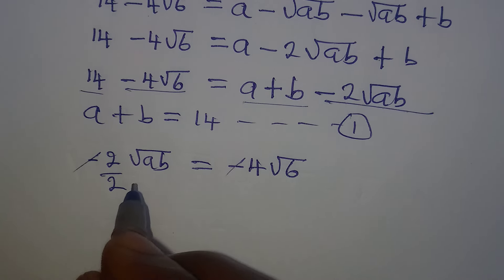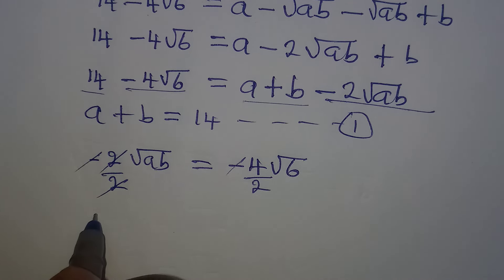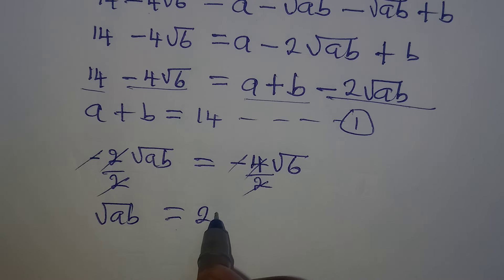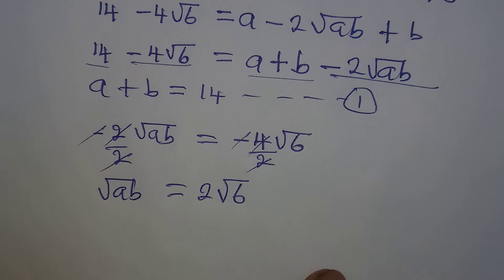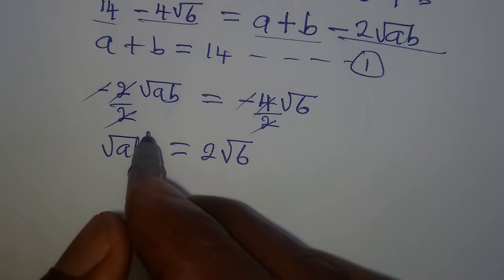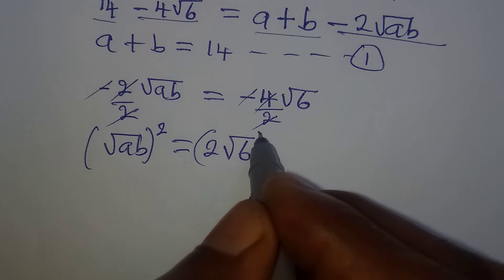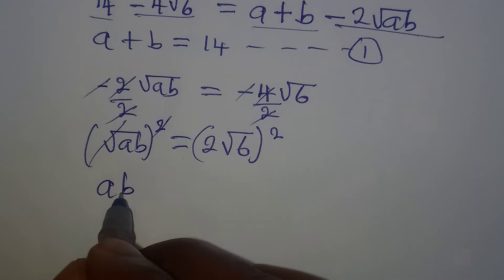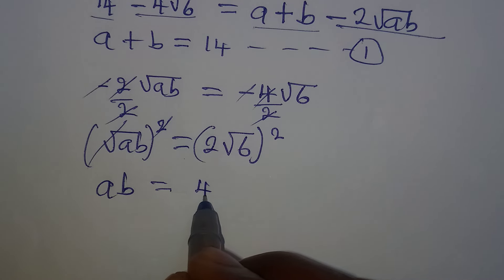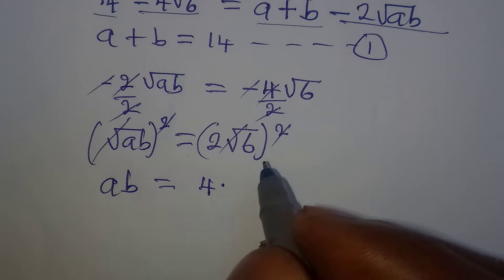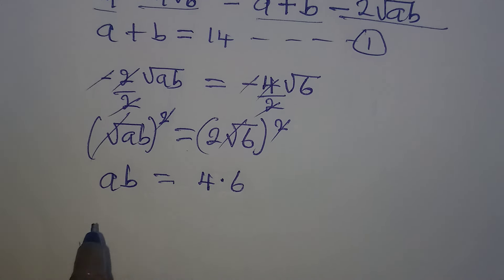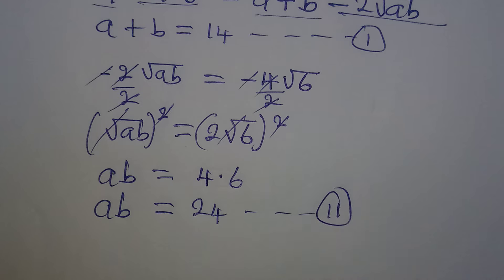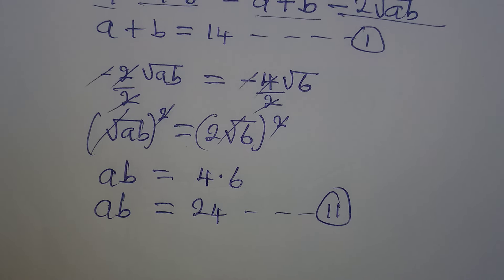The negatives cancel, and we can divide both sides by 2, so √(ab) equals 2√6. We can square both sides: ab equals 2 squared which gives 4, then multiplied by 6, giving us ab equals 24. This becomes our equation two.